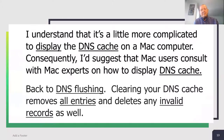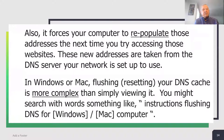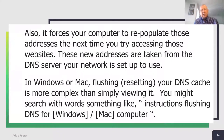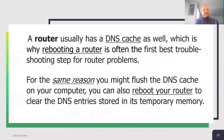Now, back to DNS flushing. Clearing your DNS cache removes all entries and deletes any invalid records. It also forces your computer to repopulate those addresses the next time you try accessing those websites. These new addresses are taken from the DNS server your network is set up to use. On both Windows and Mac, flushing — which is resetting your DNS cache — is more complex than simply viewing it. You might search for something like 'instructions for flushing DNS for Windows' or 'for Mac,' whichever you use.